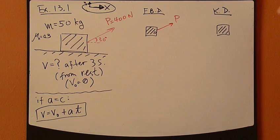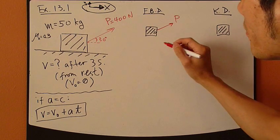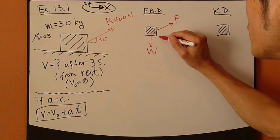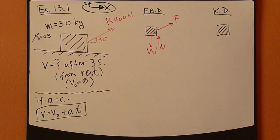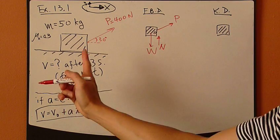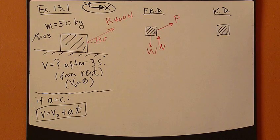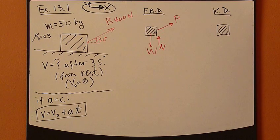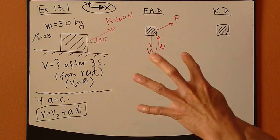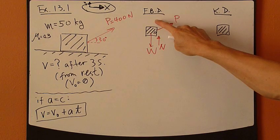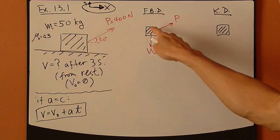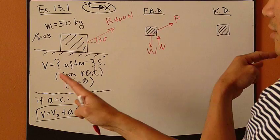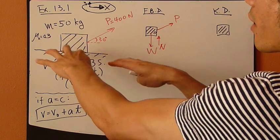Next, for free body diagram, you draw all the forces acting on it, external forces. Now you have this pulling force P this way at 30 degrees. And you have weight. And you have normal force, right? Normal force and reaction force going back up from the ground. And what else? Well, you have friction force.